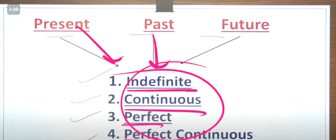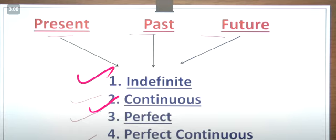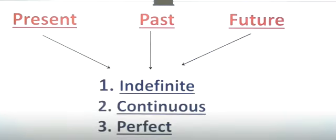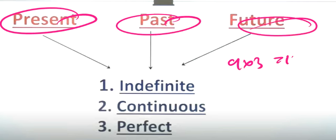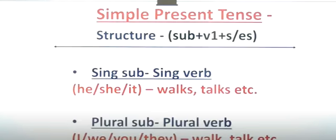Present, past, and future - indefinite, continuous, perfect, and perfect continuous. Total tenses: 4, 4, 4 - 12 tenses. Simple present tense.